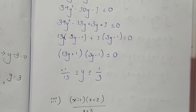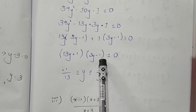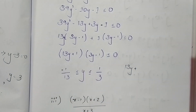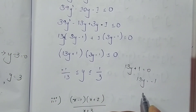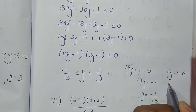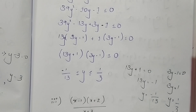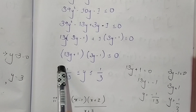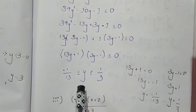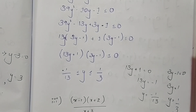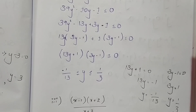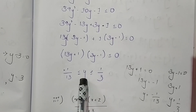Taking minus as common: 39y² - 10y - 1 ≤ 0. Factoring gives (13y + 1)(3y - 1) ≤ 0. Equating gives y = -1/13 and y = 1/3. Since this is a ≤ 0 case and -1/13 < 1/3, the range is -1/13 ≤ y ≤ 1/3.